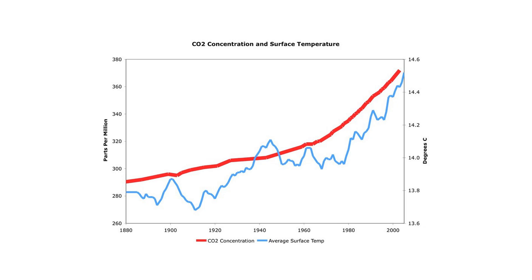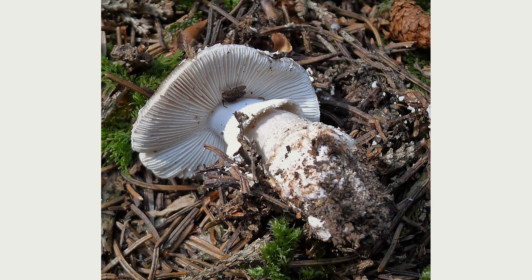Descriptive statistics is used to summarise and describe data. For example, if a lawyer wants to know the average age of a group of people, they would use descriptive statistics to calculate the mean age. Inferential statistics, on the other hand, is used to make inferences about a population based on a sample of data. For example, if a lawyer wants to know the probability that a certain event will occur, they would use inferential statistics to make that prediction.